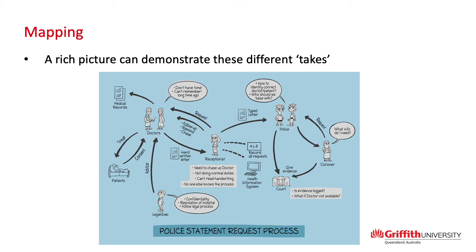When I normally do these, I try to do them with potential clients or people I've worked with in research — drawing a broad stroke of the problem in an animated-style form. In this computer-generated example, you've got different people involved: the coroner on one end, the legal executor on the other. This is a police statement request process for someone who's sick or dying — what evidence does the doctor need, what does the court need, what does the receptionist need, and so on.